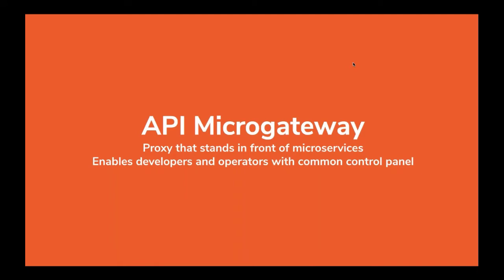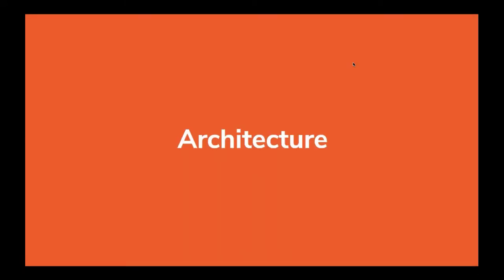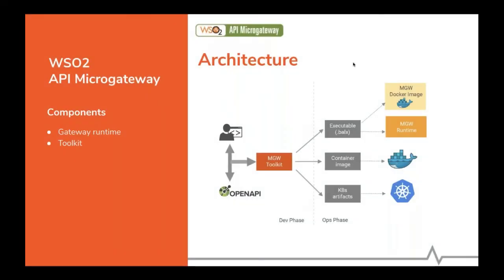This results in a service mesh kind of architecture that gives us an extra layer for service discovery, dynamic service routing, and application of security in a unified manner across the set of microservices and services.